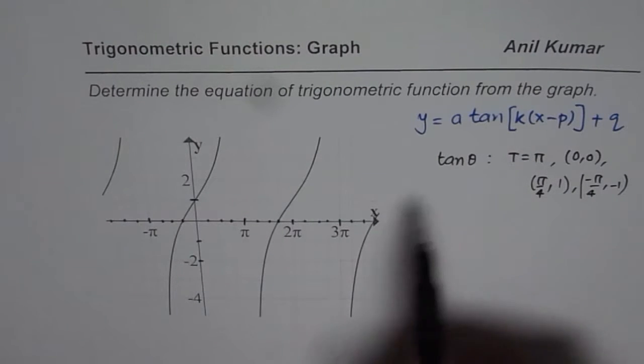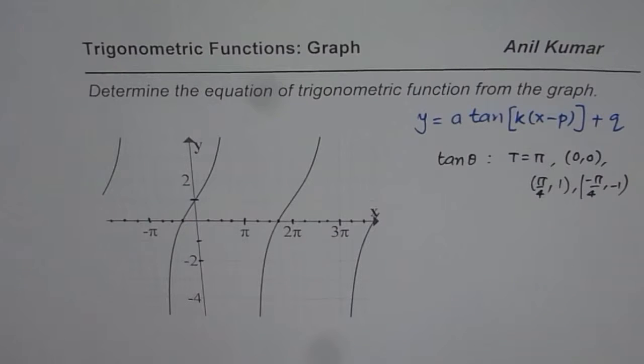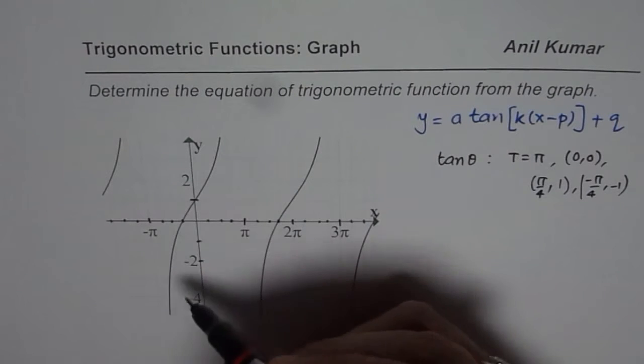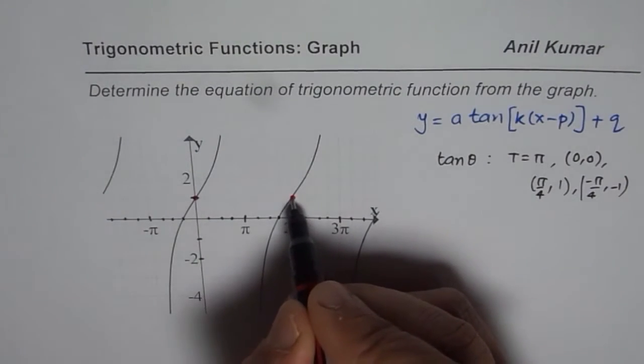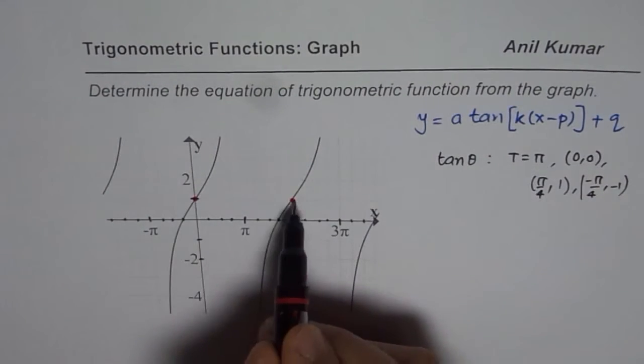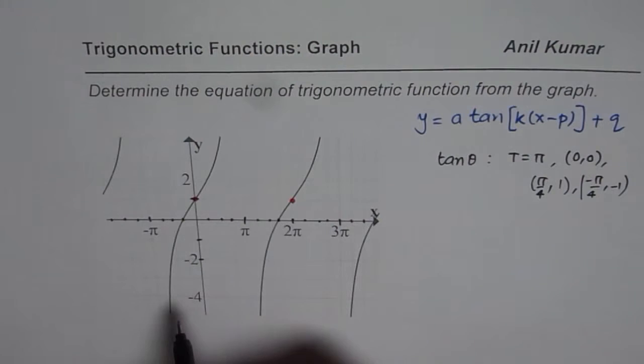Now from this particular graph, we can see that the concavity of the curve changes at this point and then at this point. So difference between these two points gives us the time period.